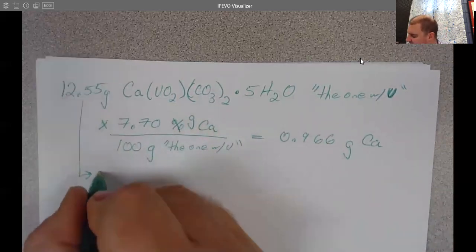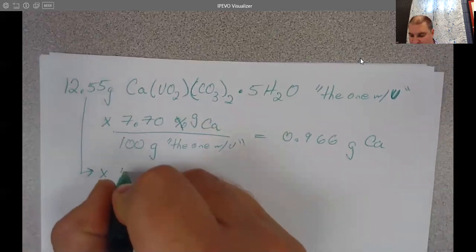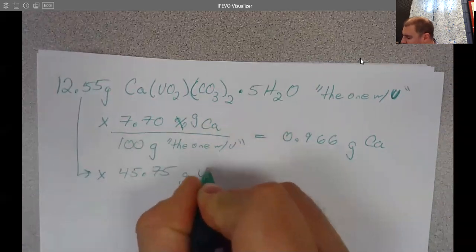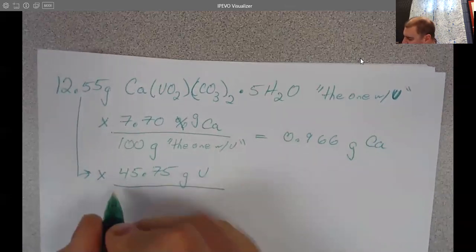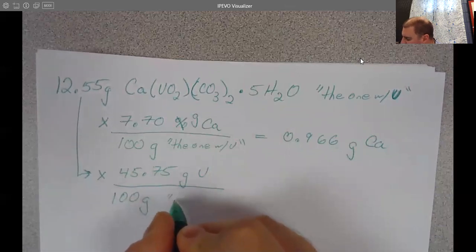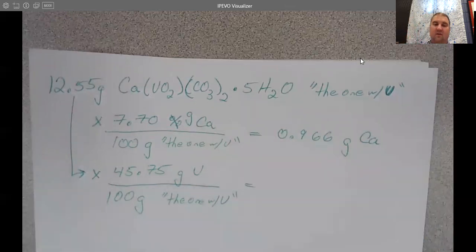To continue this, you could also find the grams of uranium. And so for this one, there is also 45.75% uranium in the compound, which means there are 45.75 grams of uranium for every 100 grams of the compound.